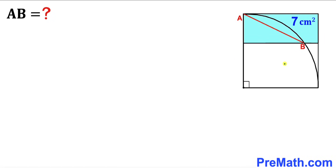Welcome to PreMath. In this video we have a quarter circle fully inscribed in a square, where AB is the chord of this quarter circle. Furthermore, this blue shaded rectangle is part of the square. The area of this blue shaded rectangle is 7 centimeters squared, and our task is to find the length of chord AB.